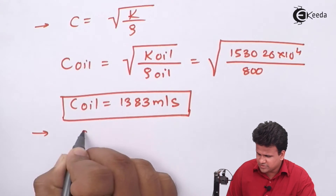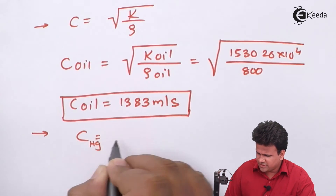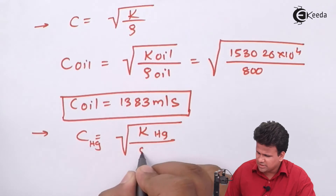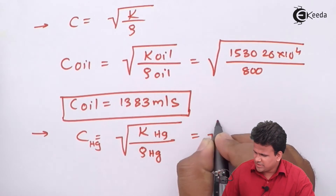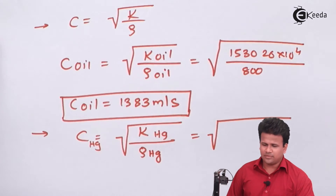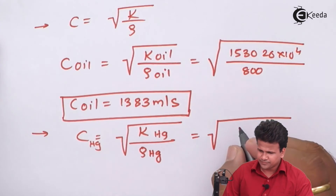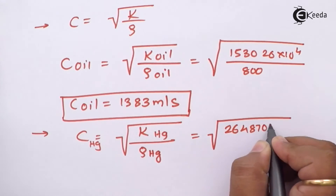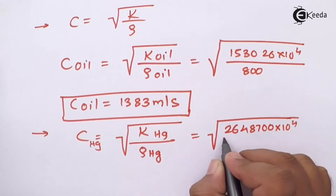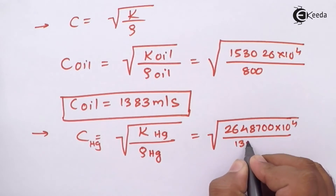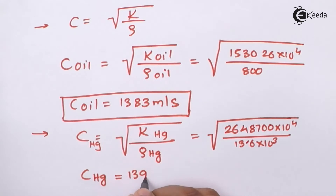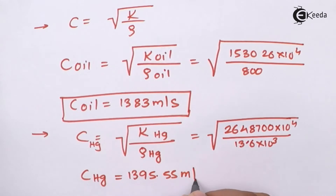Now, C of mercury = √(K_Hg / ρ_Hg) = √(26488700 × 10⁴ / 13.6 × 10³). On calculation, C of mercury comes out to be 1395.55 m/s.